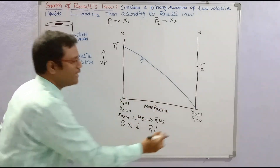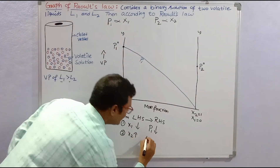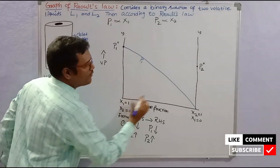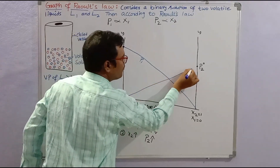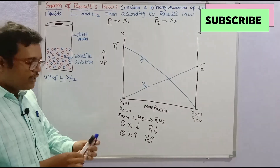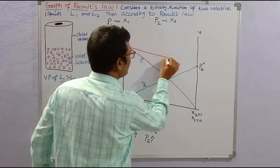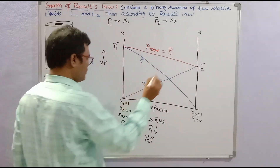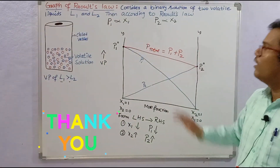From left hand side to right hand side, x2 will increase — the mole fraction of liquid 2 will increase. When the mole fraction of liquid 2 increases, the partial vapour pressure also increases. This is P2, the partial vapour pressure of liquid 2. The total vapour pressure is calculated as P total equals partial vapour pressure of component 1 plus partial vapour pressure of component 2. That is the graphical representation of Raoult's law.